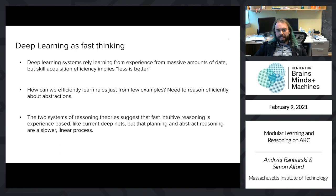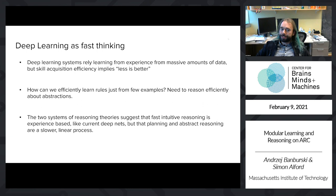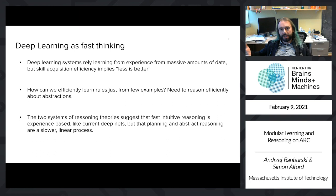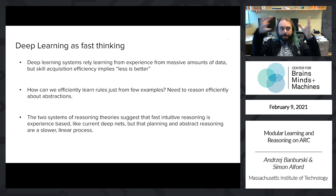Current deep learning systems learn by taking massive amounts of data and doing associative reasoning. But if we're defining intelligence as efficiency in skill acquisition, we don't want massive amounts of data — less is better. The question is: how can we efficiently learn from small amounts of data, say few-shot learning? How can we efficiently learn the rules and then apply them exactly? The obvious thing is to have an architecture capable of reasoning about abstracted versions of relevant entities or objects.